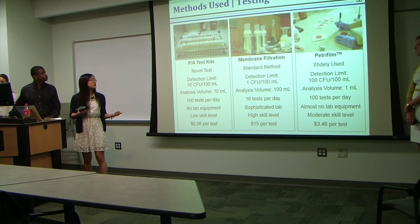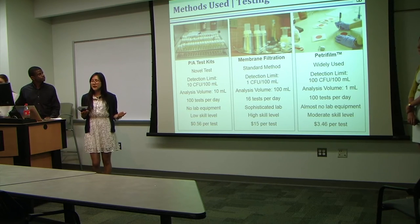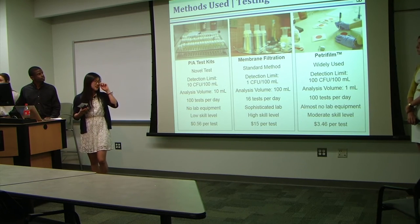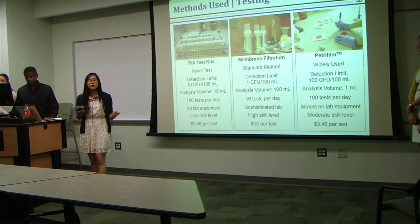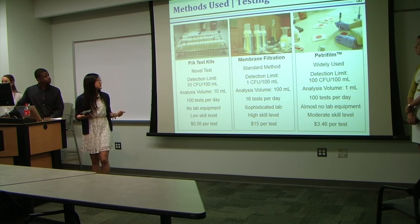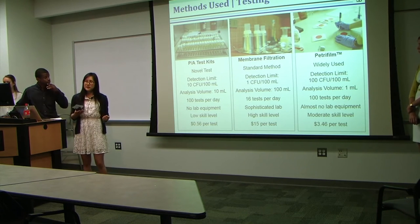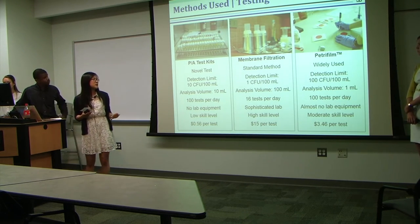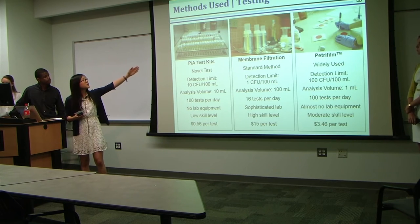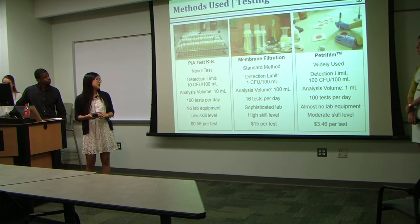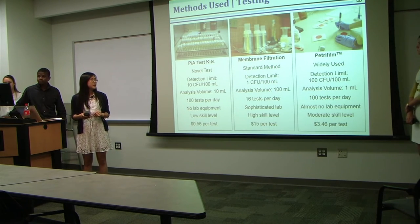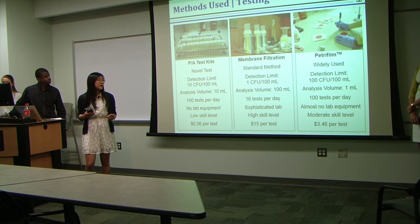On the other hand, membrane filtration, which is the currently used standard method of accurate water quality tests, has a detection limit of 1 CFU per 100 milliliters—it can detect down to lower concentrations than the PA test kits. The analysis volume is 100 milliliters, but you can only do about 16 tests per day in the field. It requires sophisticated lab equipment and is really expensive—$15 per test—so it wouldn't be very adaptable or affordable worldwide, although it is very accurate.